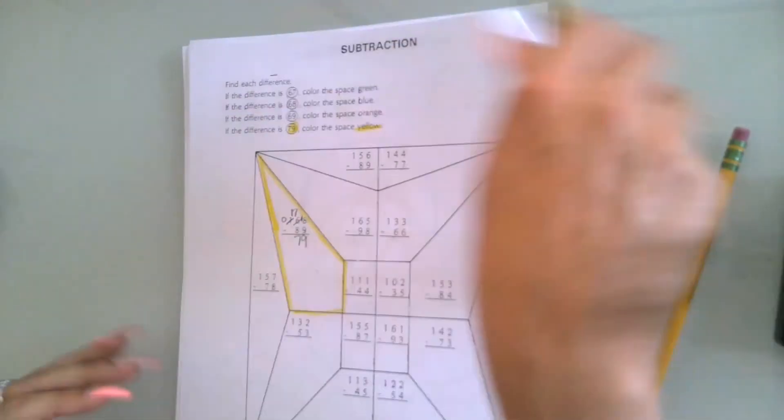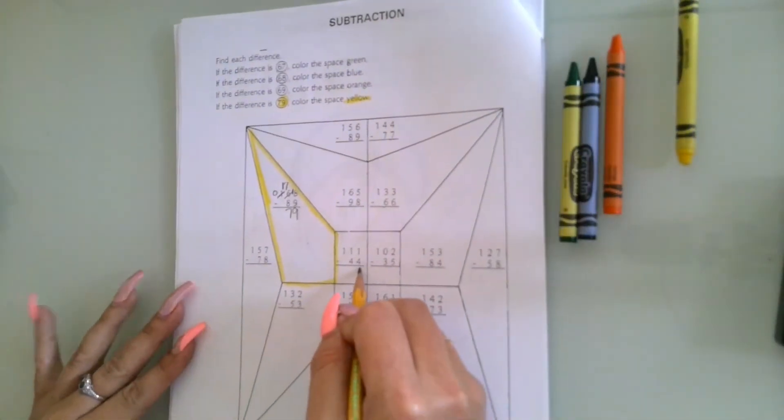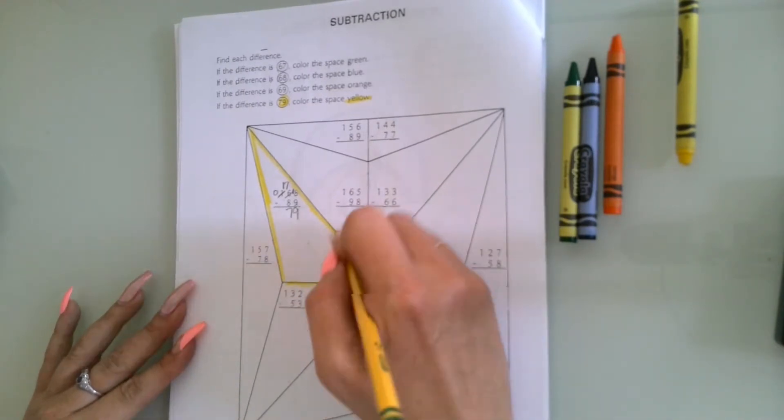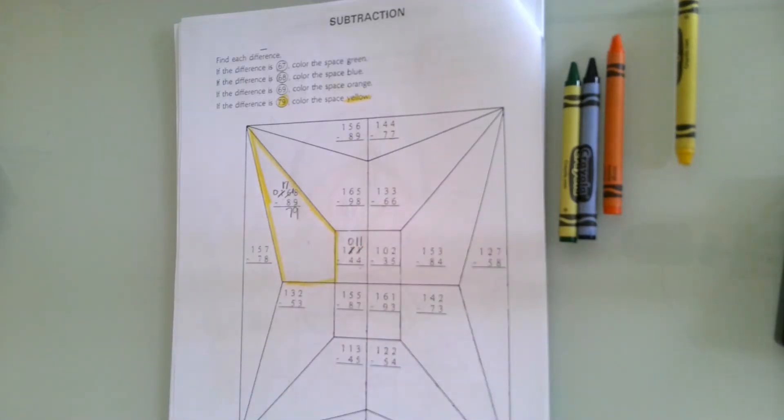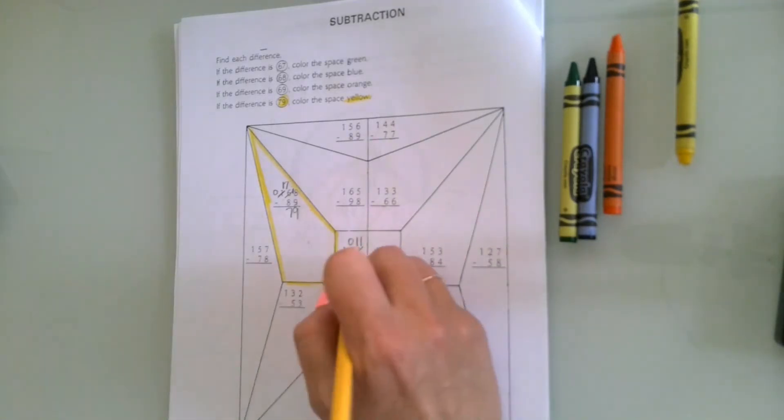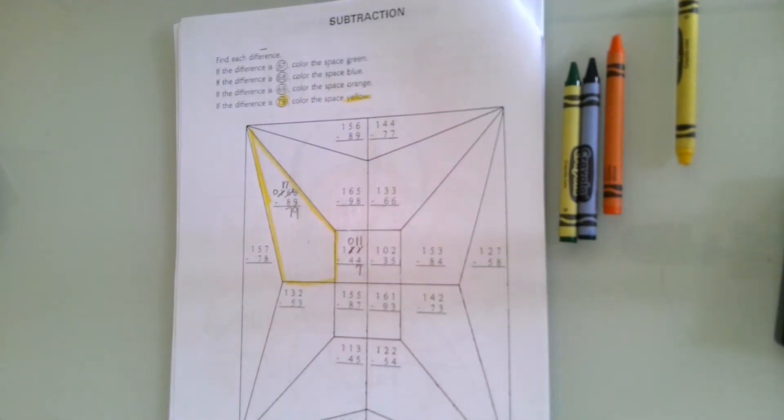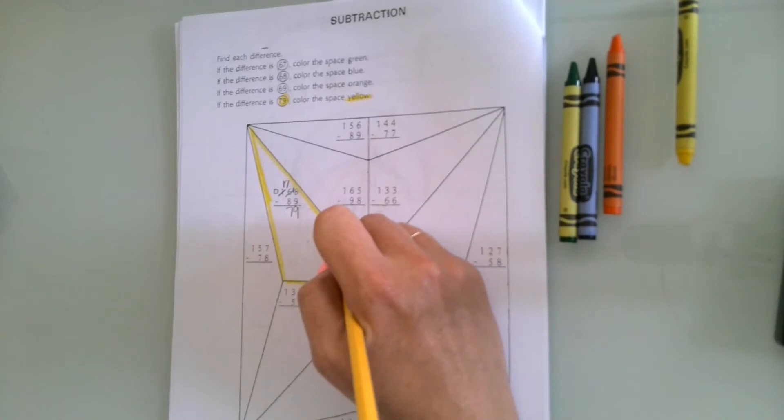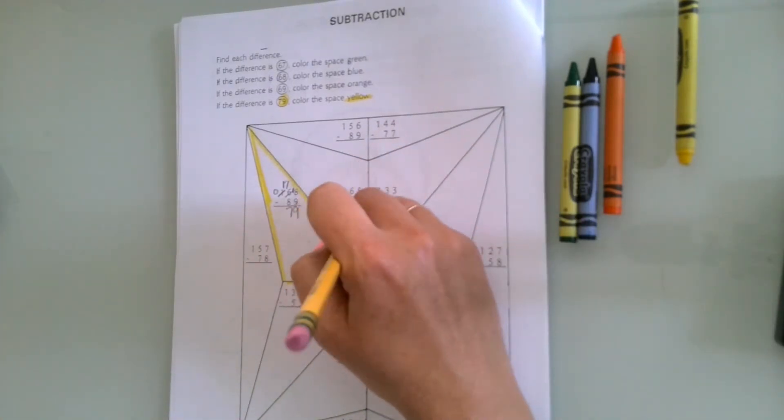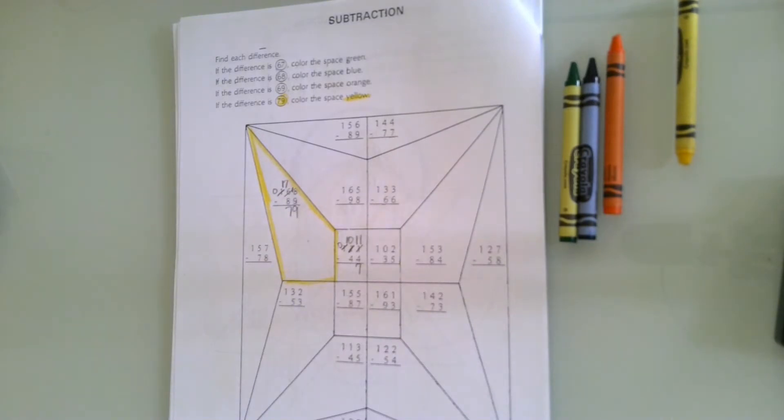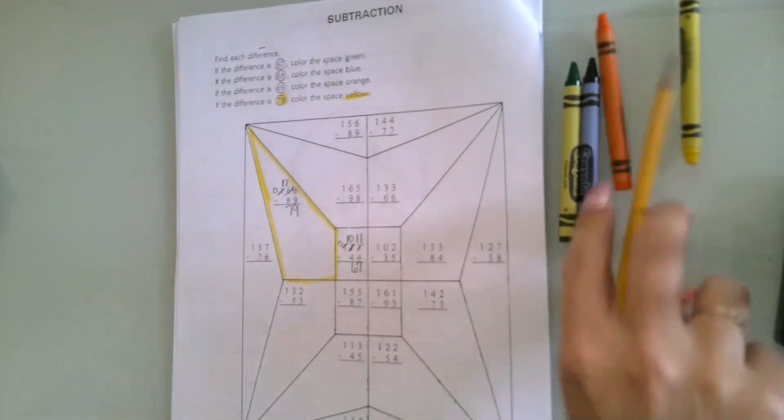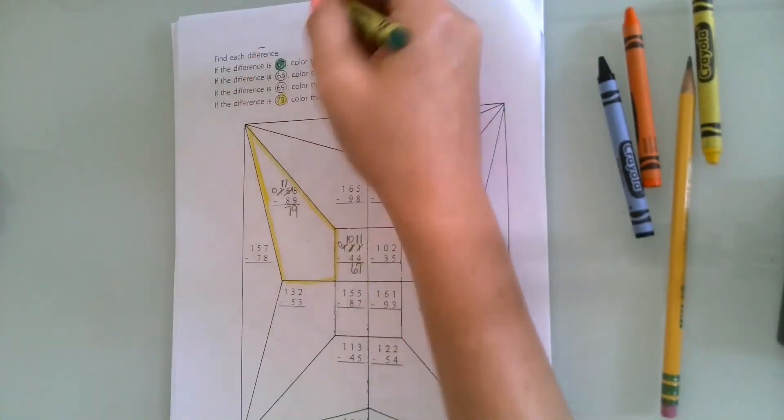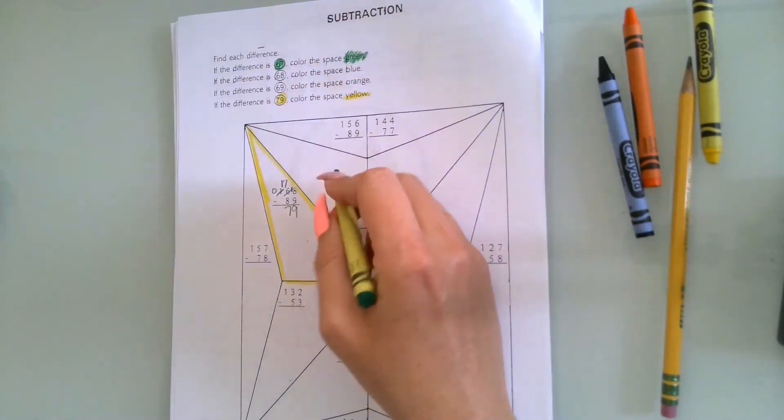I'm going to do one of these problems here. It says 1 minus 4, I can't do that. This one's a hard one. This tip becomes a 0 and now my 1 becomes 11. So what is 11 minus 4? 11 minus 4 is 7. Very good. Now 0 minus 4, I'm going to have to regroup. The hundreds place becomes a 0, tens place now becomes a 10. 10 minus 4 is going to be 6. What color am I using? 67, I'm going to use green.